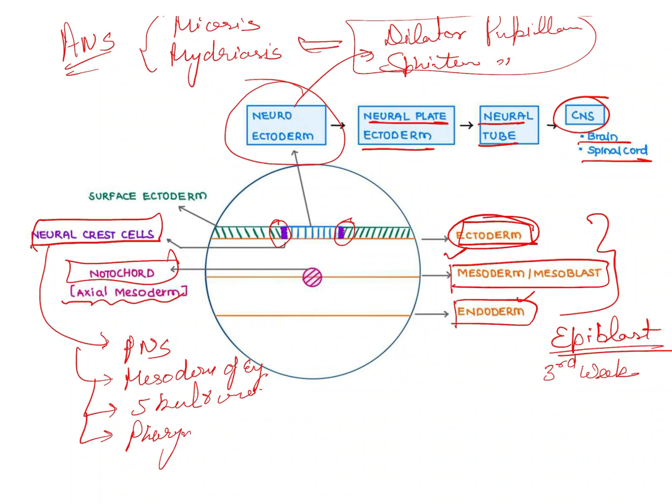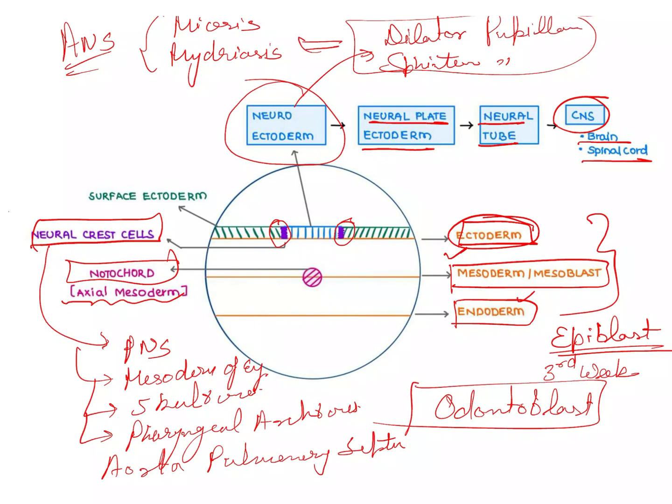Then we have the aortopulmonary septum and the very famous odontoblasts. This was a question asked in the NEET exam: odontoblasts are generally derived from the neural crest cells. These are very important things to remember.